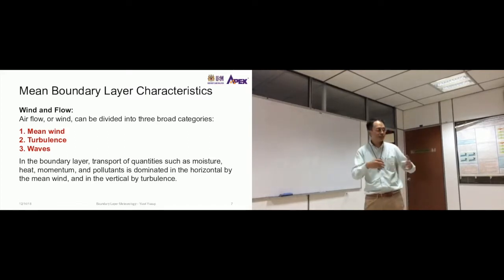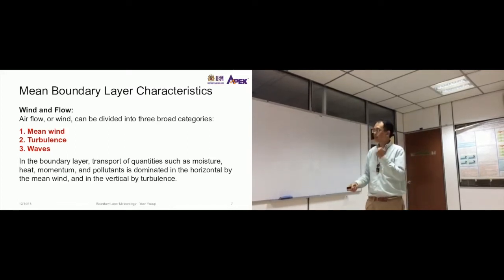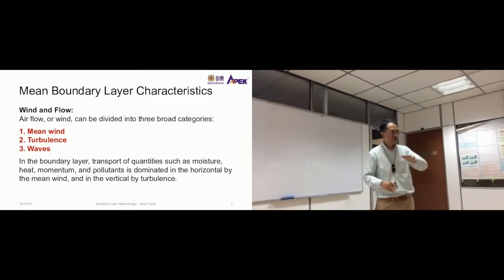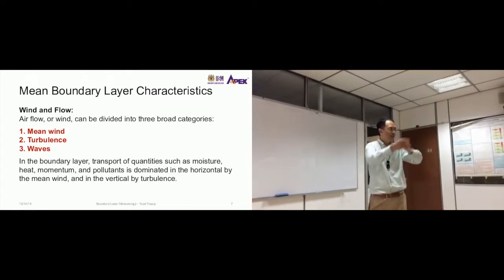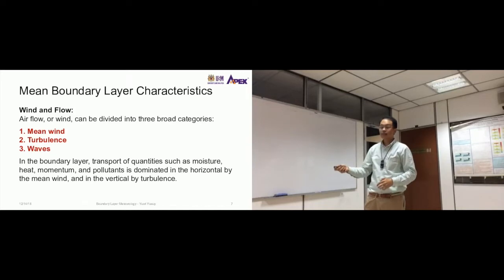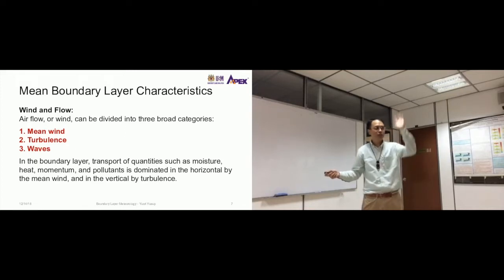So how these things are transported - moisture, heat, momentum, pollutants - is transported by mean wind and turbulence. If it's in the horizontal, moving from here to somewhere downwind, it's the mean wind or average wind. But if it's vertical, moving upwards or downwards, it is transported not by the mean wind, not the ones moving front and back, left and right, but by turbulence. That means the wind that goes up and down.